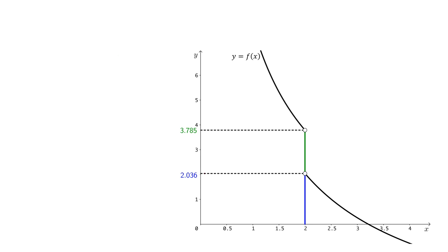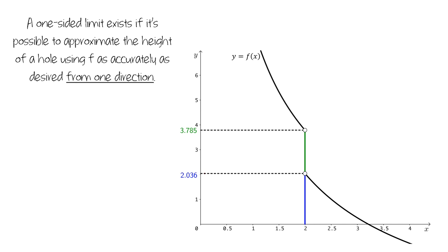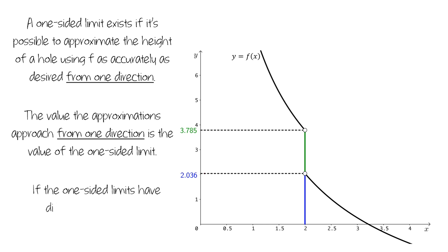In summary, a one-sided limit exists if it's possible to approximate the height of a hole using f as accurately as desired from one direction. The value that the approximations approach from one direction is the value of the limit. And if the one-sided limits have different values, then the overall limit does not exist.